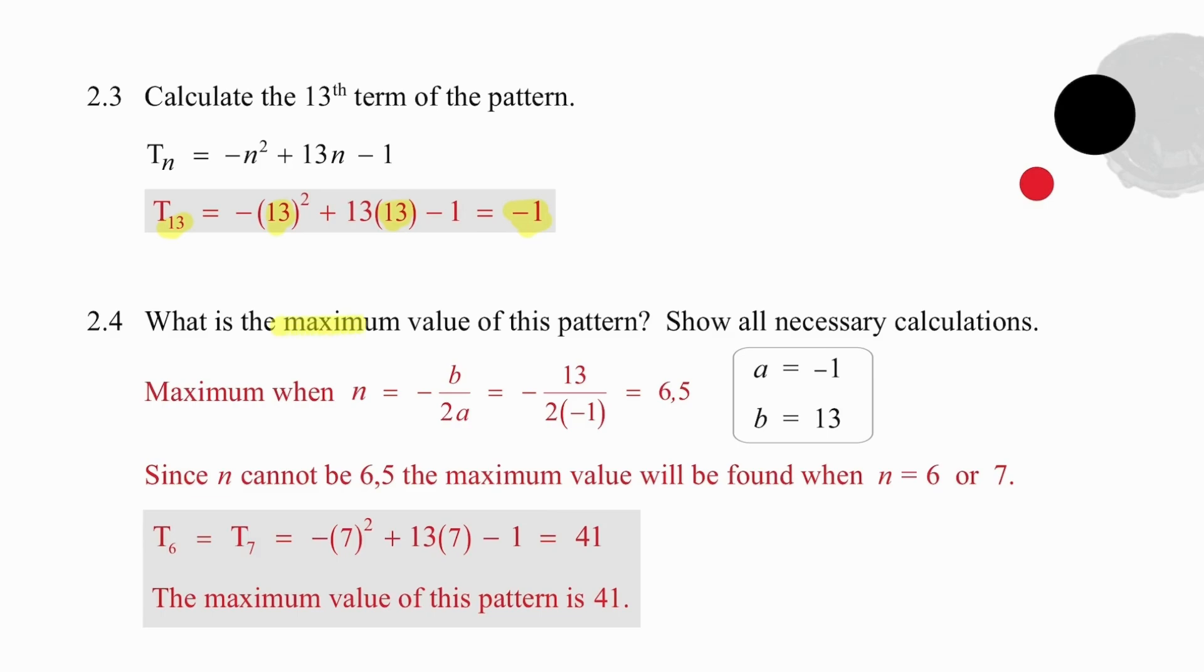In 2.4, we are asked what is the maximum value of the pattern? What is the largest value that any term can have? To understand this question, we need to think back to an earlier discussion about the fact that a quadratic pattern has a parabolic shape. Given that our quadratic pattern has a negative coefficient for n squared, we ensure that this parabolic shape gives a maximum value.